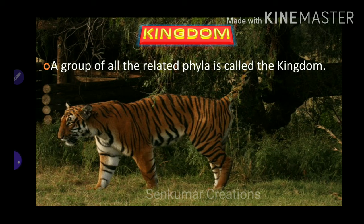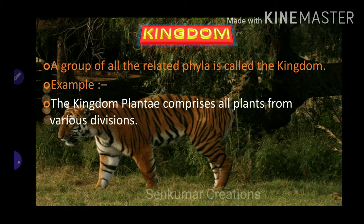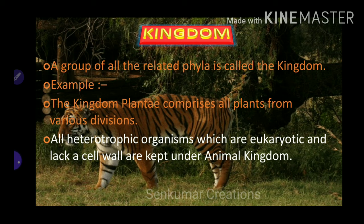A group of all related phyla is called kingdom. Example: the kingdom Plantae comprises all plants from various divisions. All heterotrophic organisms which are eukaryotic and lack a cell wall are kept under the animal kingdom.